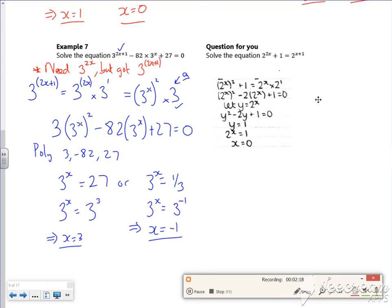So you can see the 2^(x+1) becomes 2^x times by 2. Which then becomes 2 lots of 2^x. And that's what that is there, actually.